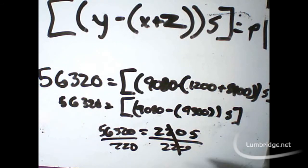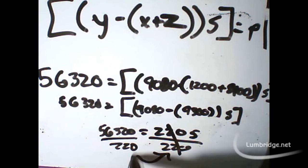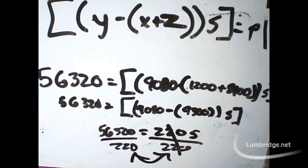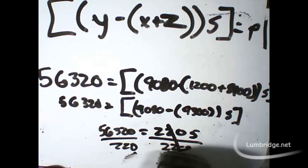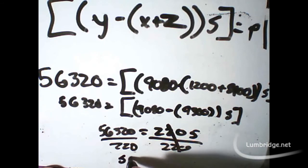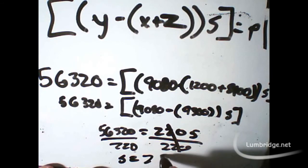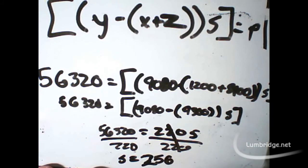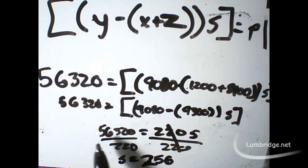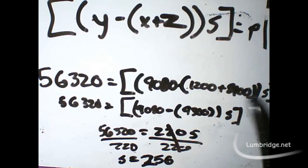We're going to divide by 220 to solve for S. These 220s cancel out. We're going to flip this around. So, that shows that we're solving for S. S equals 256. And we use this simple calculator to figure out what 56,320 is divided by 220. What this means.